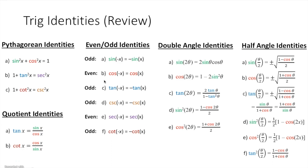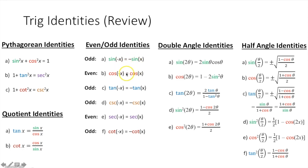Let's start by reviewing some of the trig identities you learned in Algebra 2 and Precalculus. We have the Pythagorean identities, quotient identities, which functions are even or odd, double angle identities, and half angle identities. Some of these will come up in calculus, and you need to have these memorized. When you're taking derivatives or integrals, you need to know when to substitute in a specific identity, so make sure you have these memorized when test time comes.